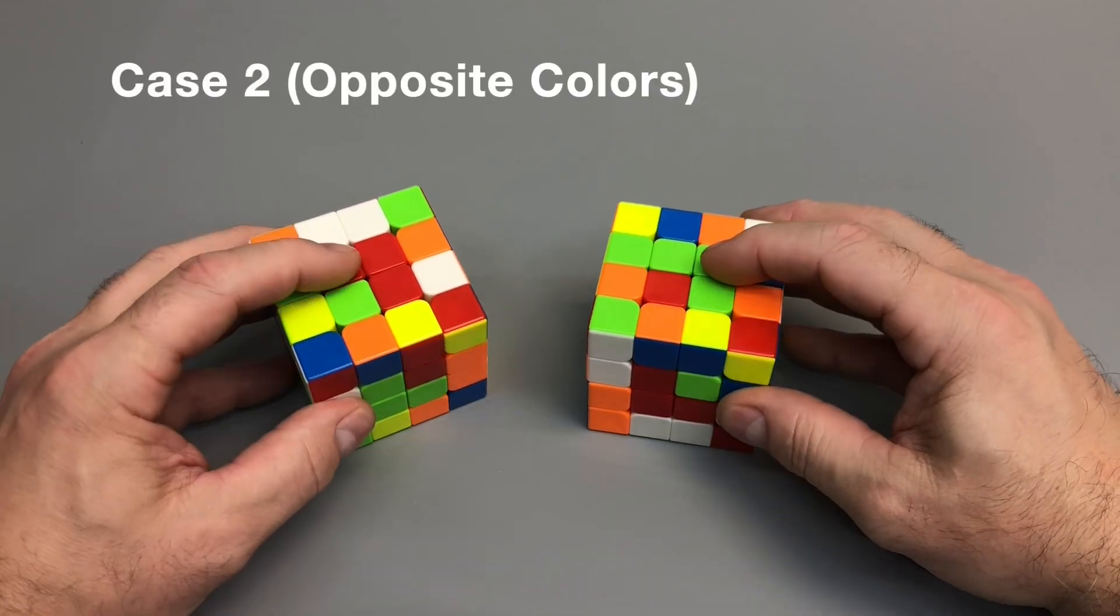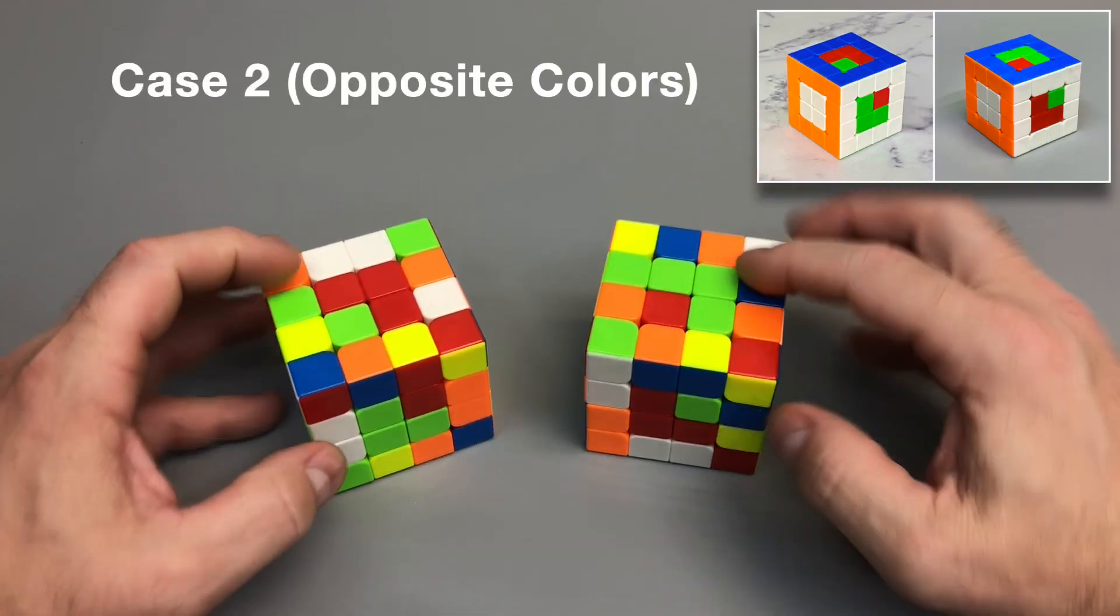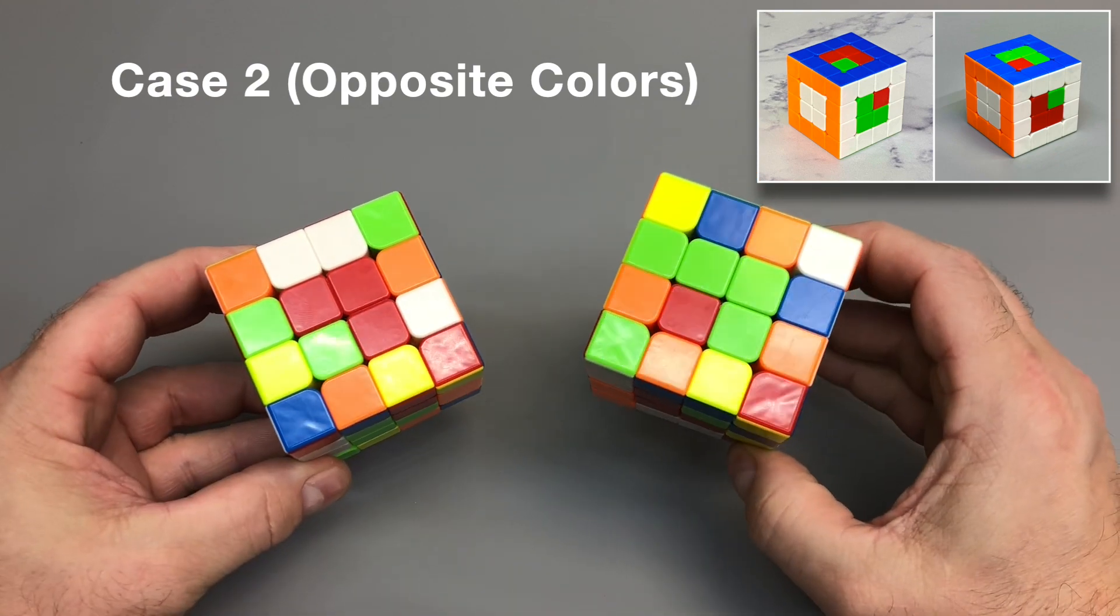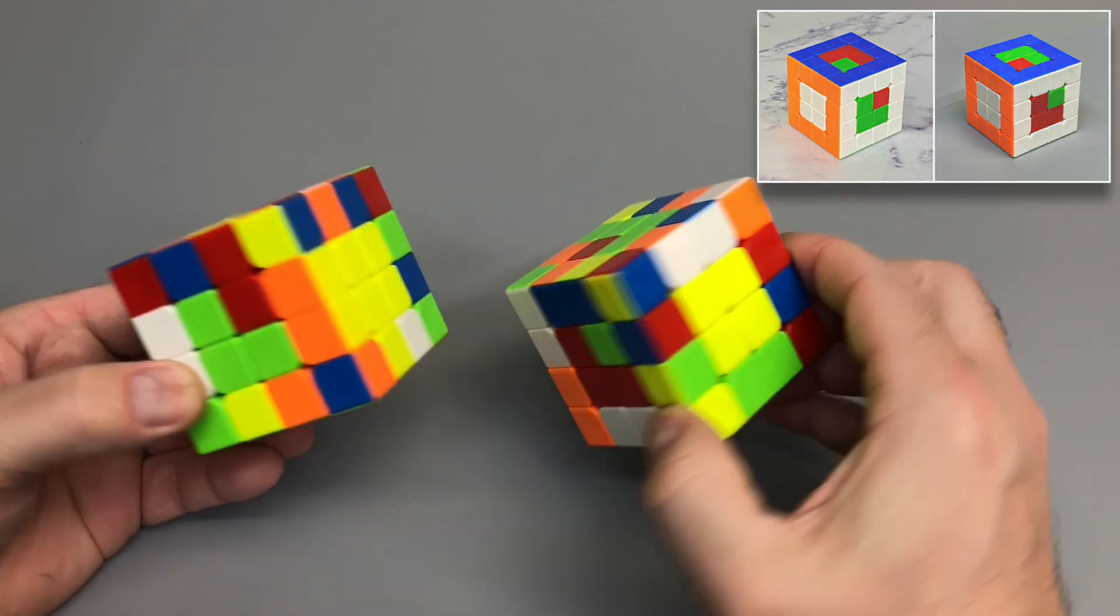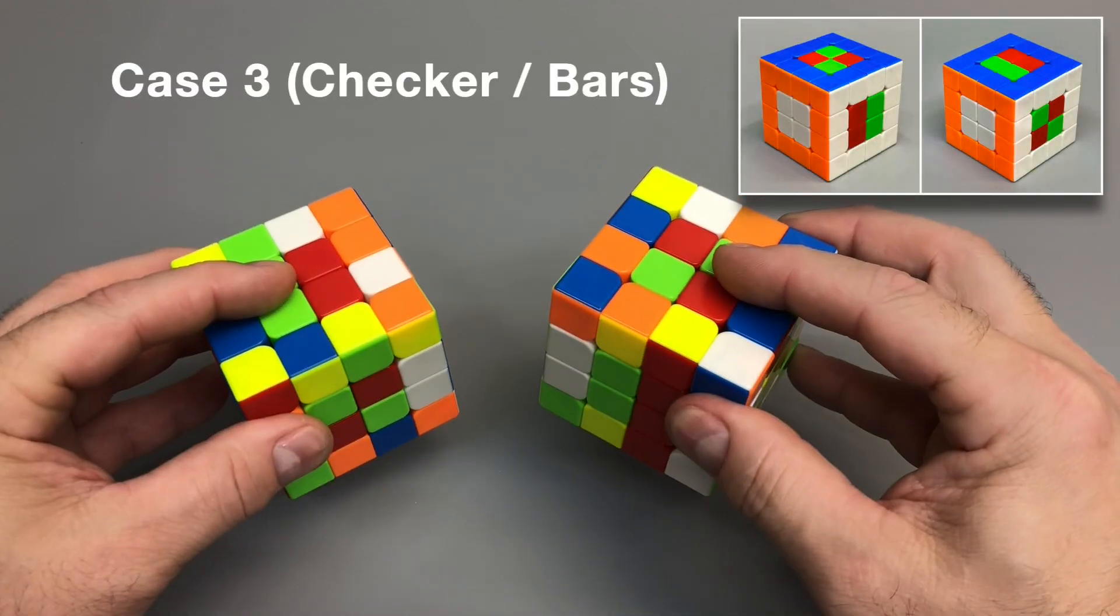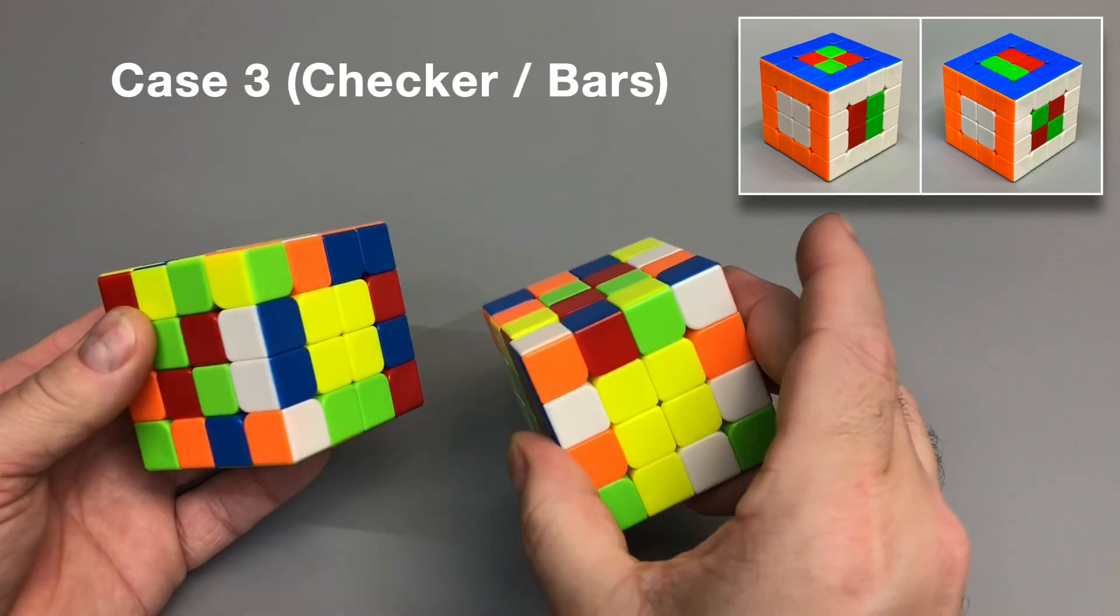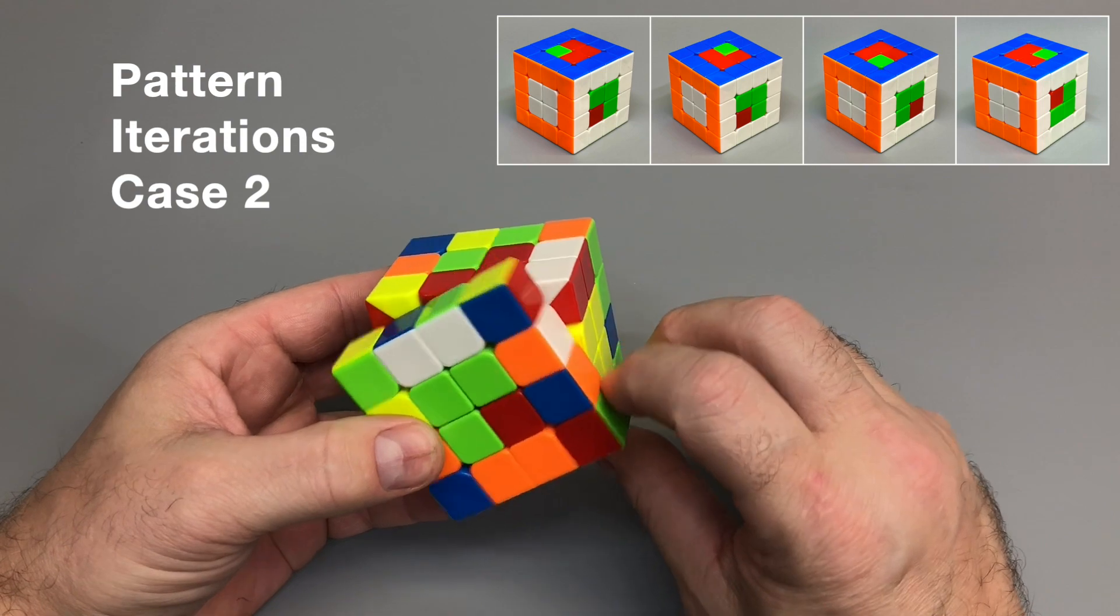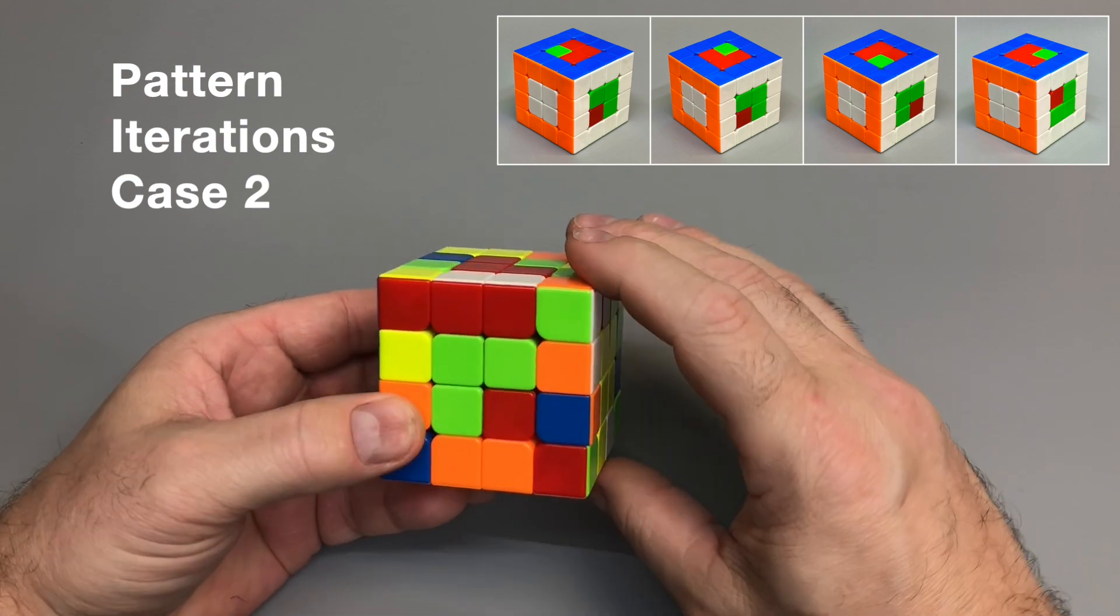So I won't consider these different cases when the pattern is the same but opposite colors. So these two, I will consider the same case as well as these two. Also, each iteration of this case is considered the same.